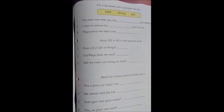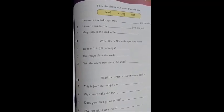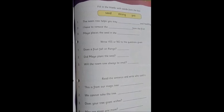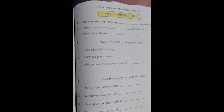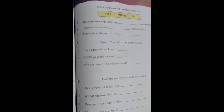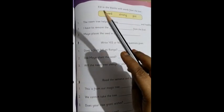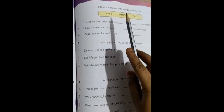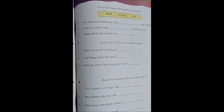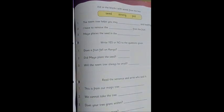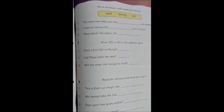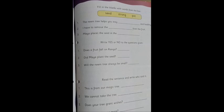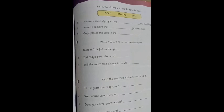So now we are going to do page 73 from our Little Thinker English. This page is in three different parts. So let's see the first part. What is written? Fill in the blanks with words from the box. So let's first read the words from the box. The first word is seed. The next word is strong, and the last word is pot.